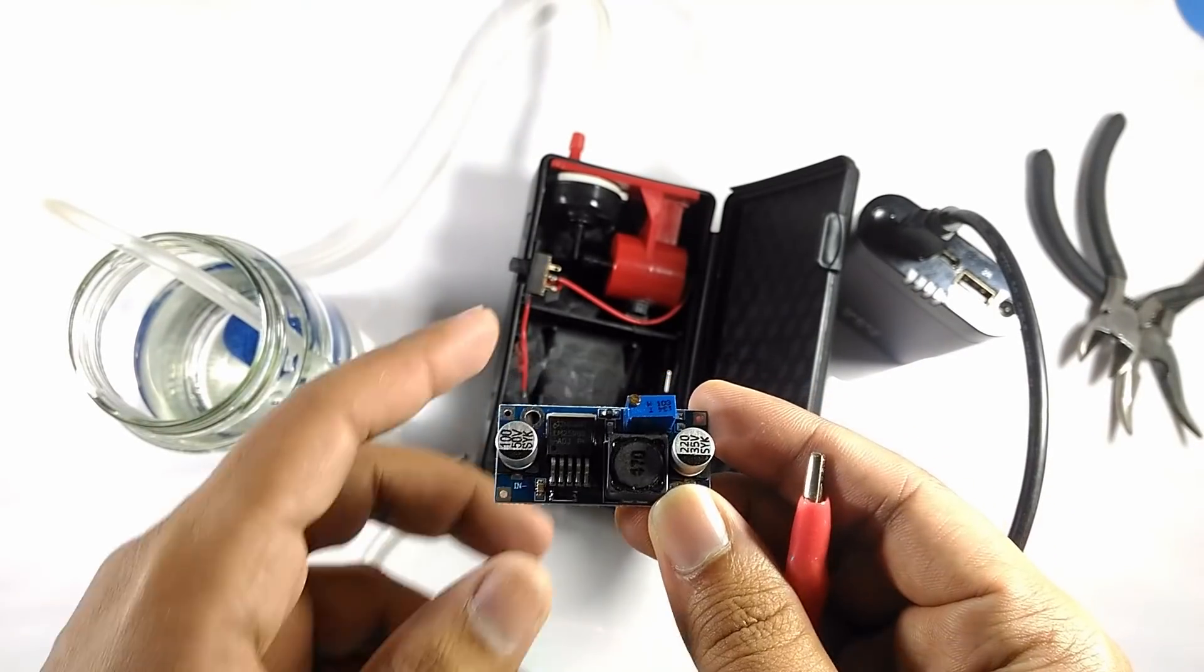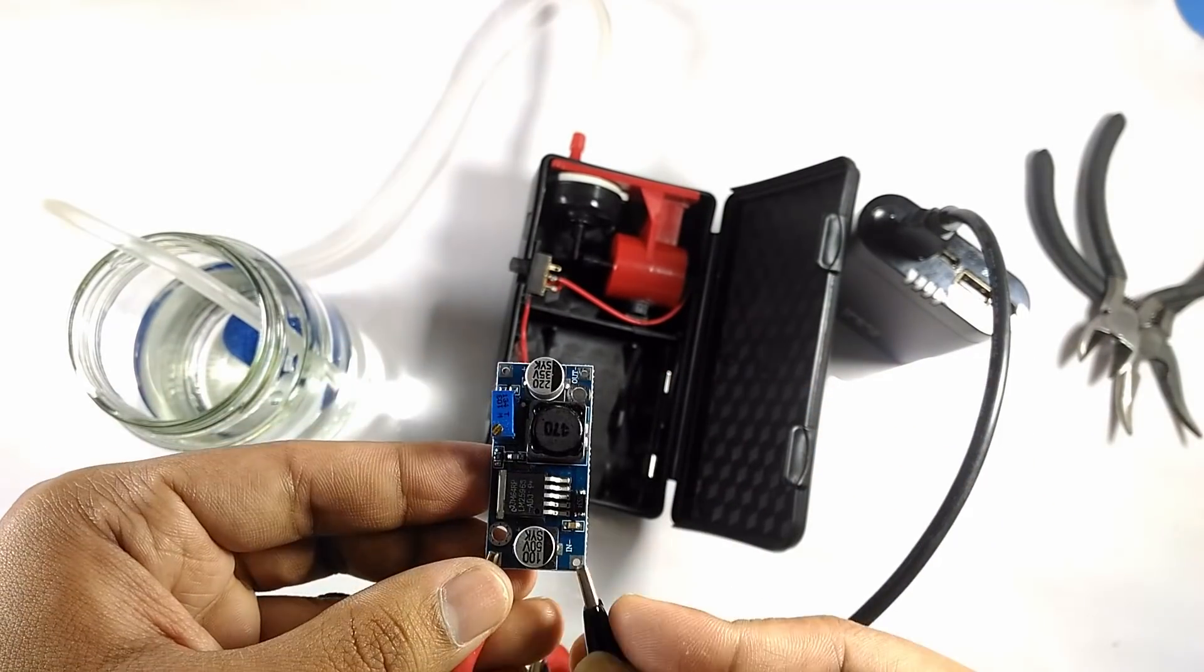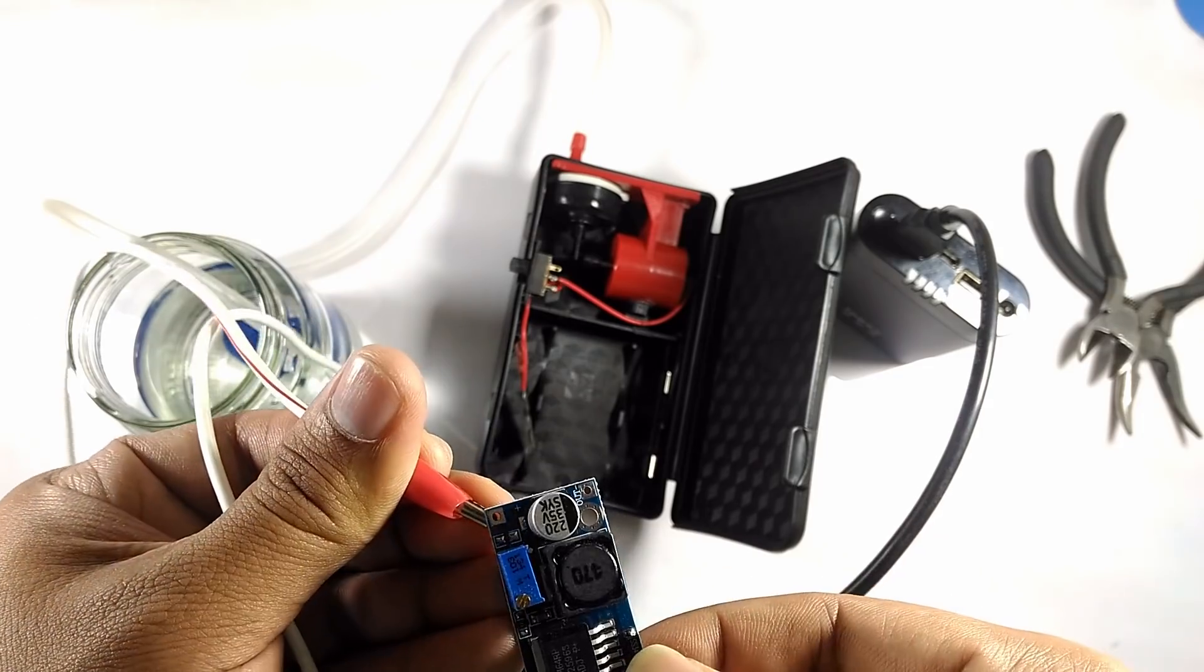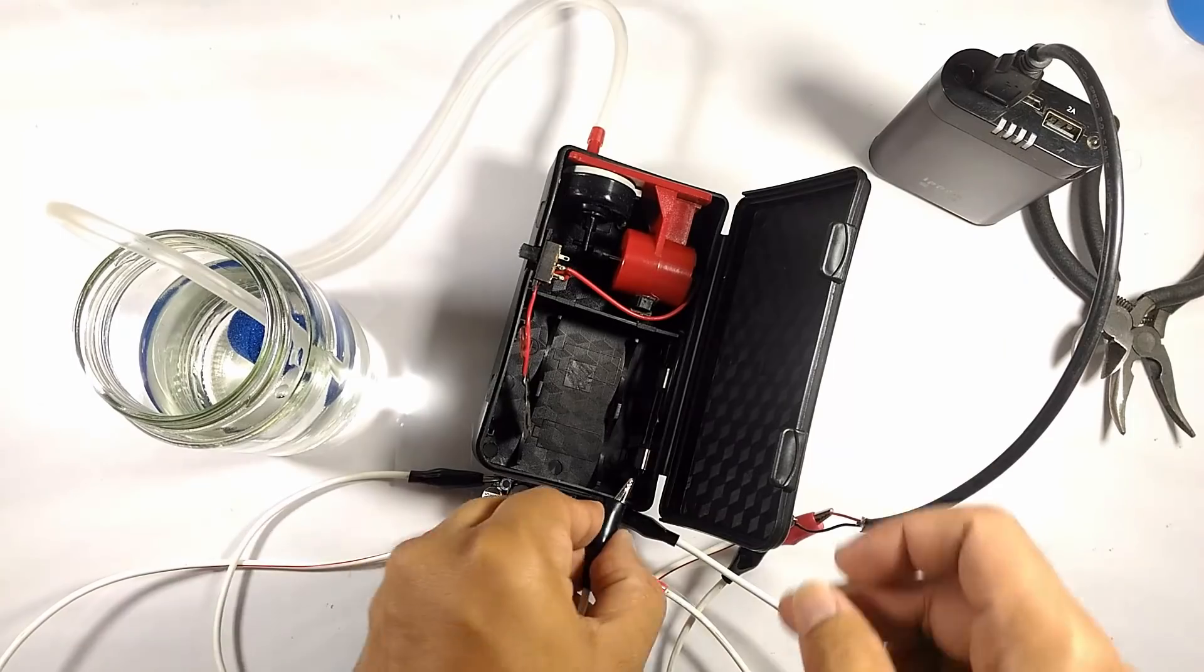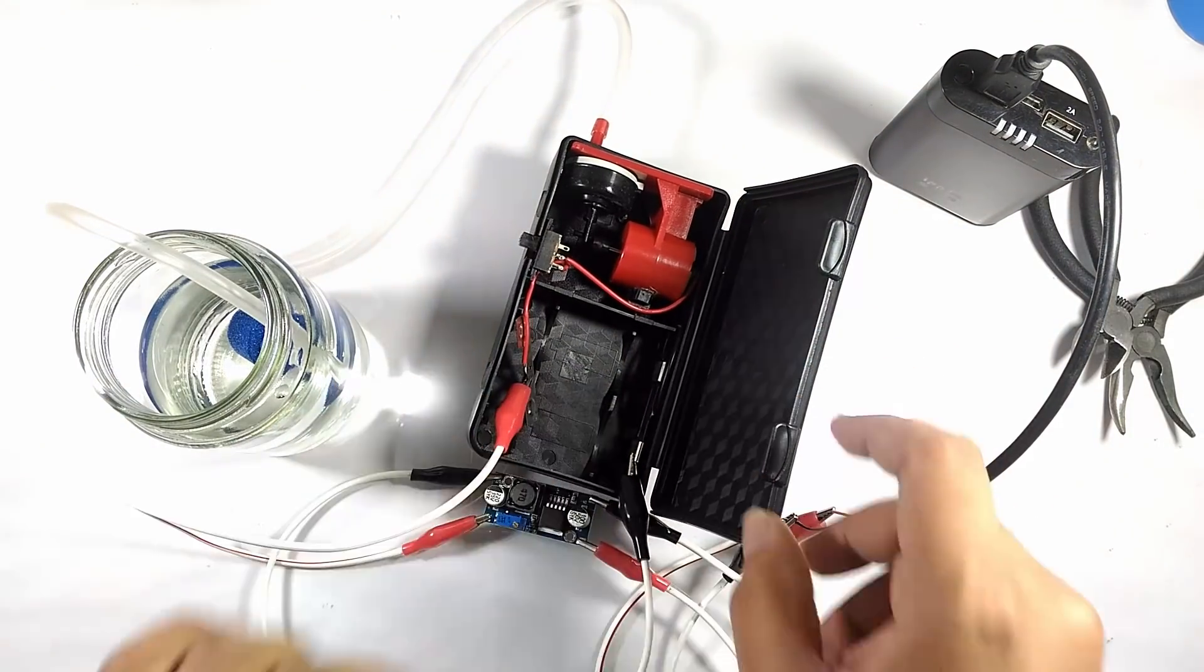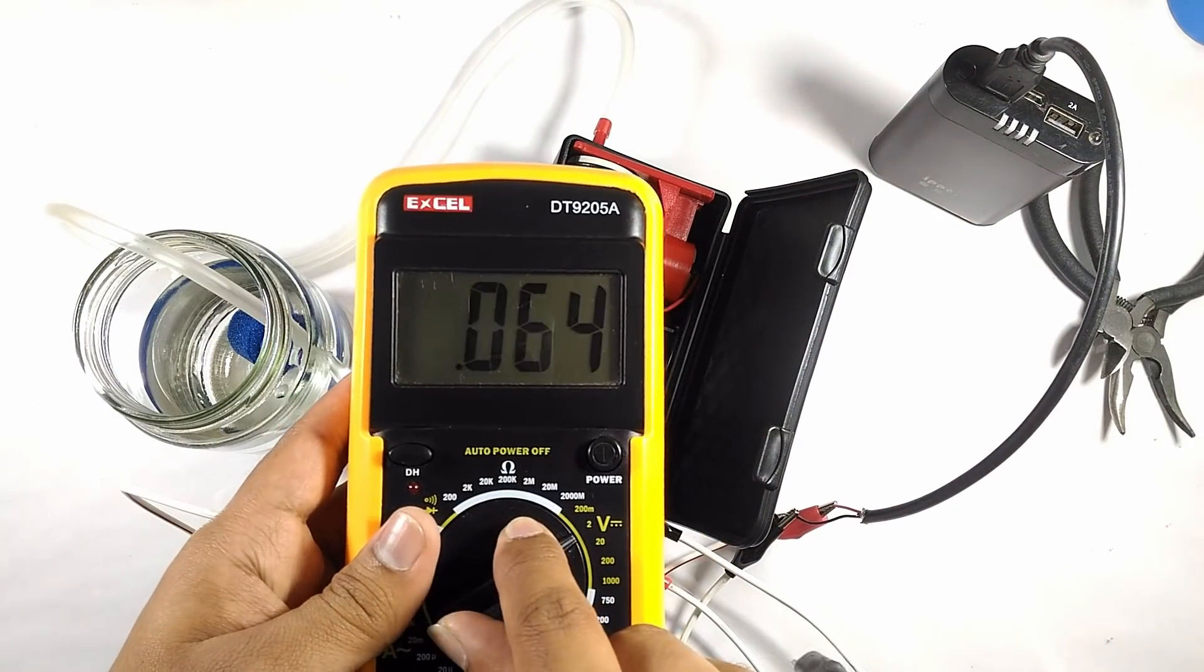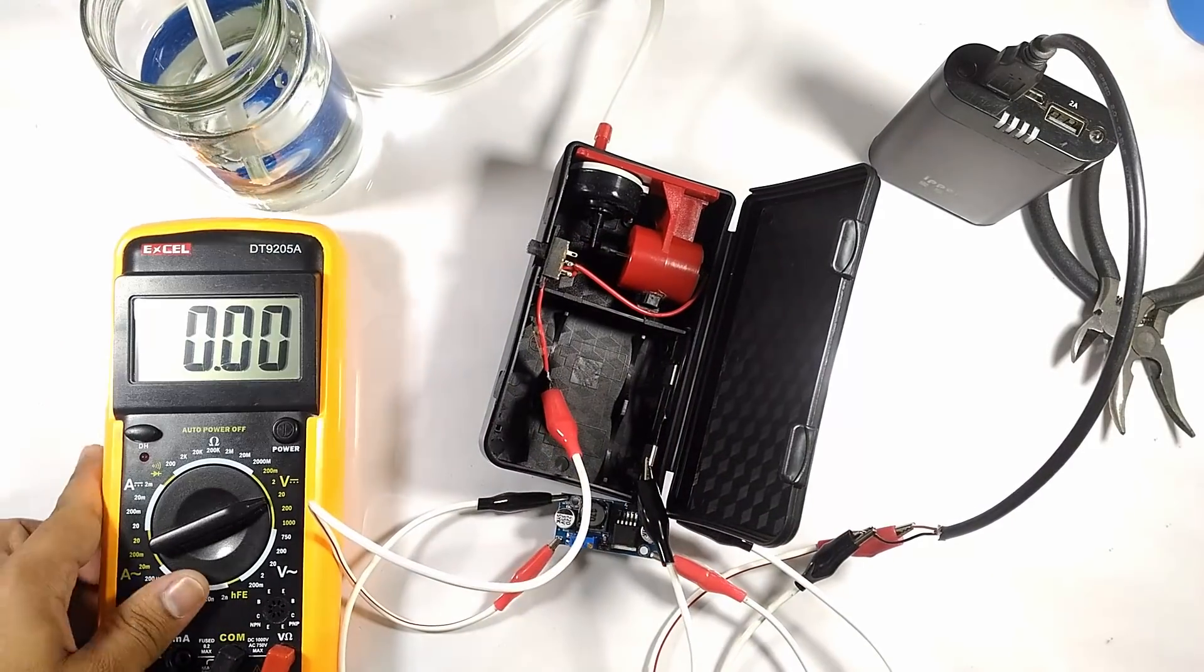I will connect the power bank to the input marked in the buck converter temporarily. Make sure of the polarity and not to short out the contacts. The output from the buck converter goes to the motor of the pump. Don't turn on the switch for the pump till we use a voltmeter to check the output from the buck converter.